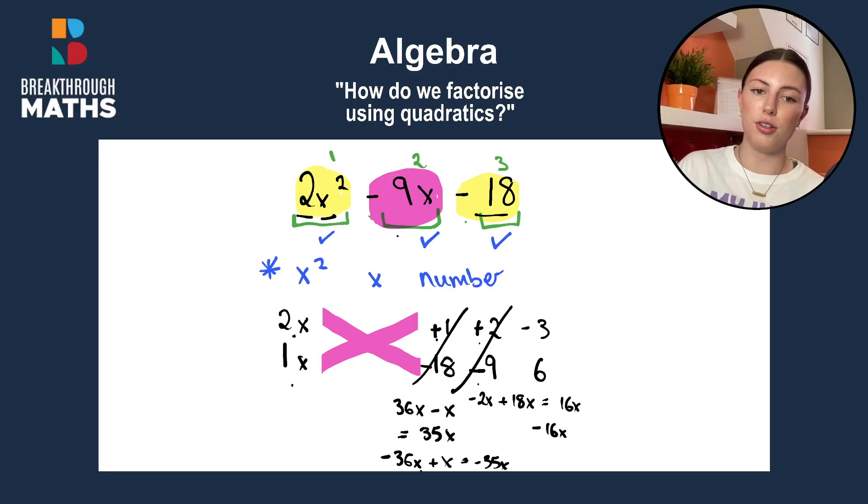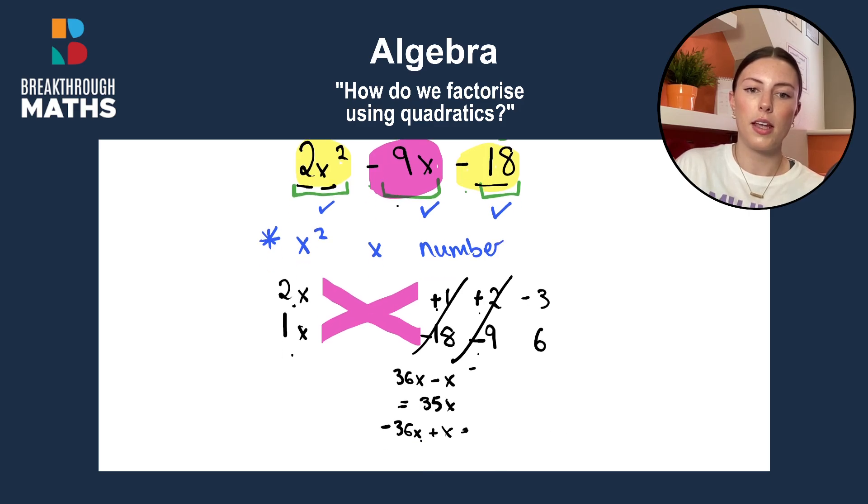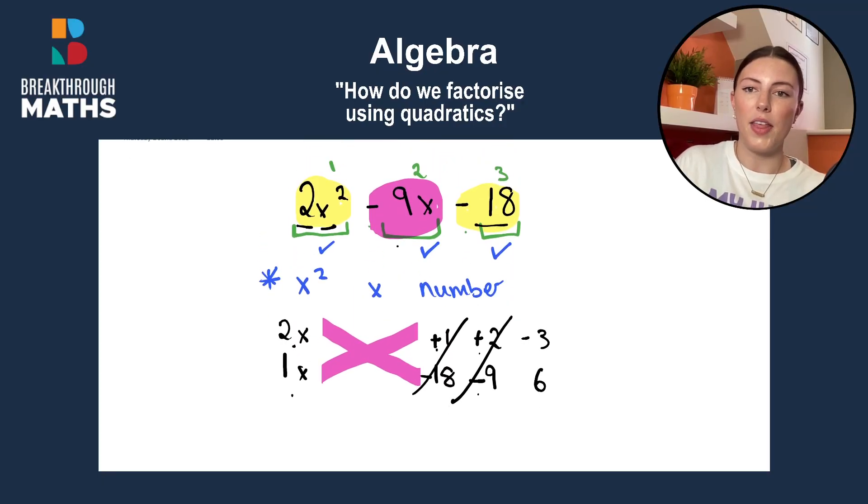We're now on to minus 3 and plus 6. So I'll just rub out here to make a bit of room. And we can see here that if we multiply 6 by 2, we get 12x. And if we have minus 3 by x, we have minus 3x. So 12 minus 3 gives us 9x. So we're really close. We need minus 9.